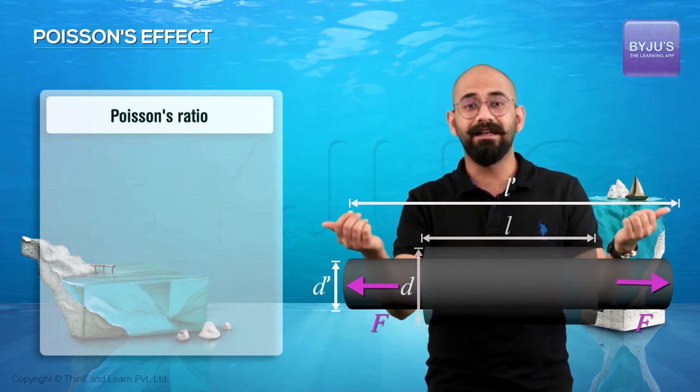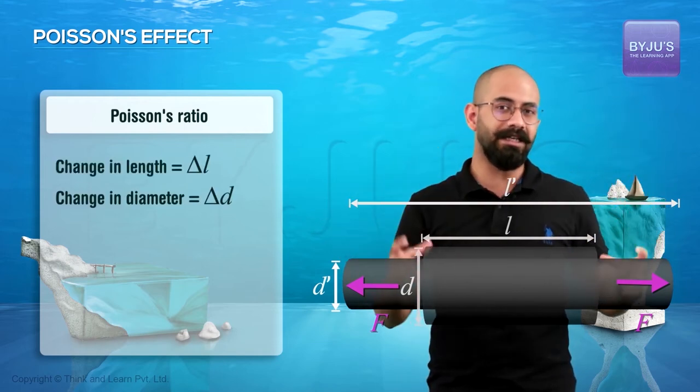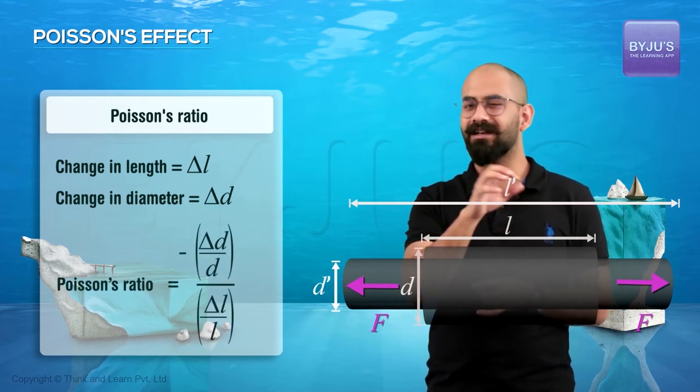Basically, let's say the length increases by delta L and the diameter reduces by delta D. Poisson's ratio equals minus delta D by D divided by delta L by L.